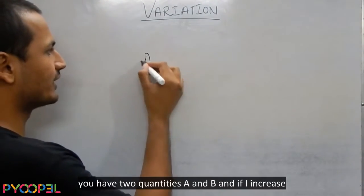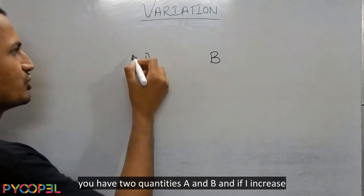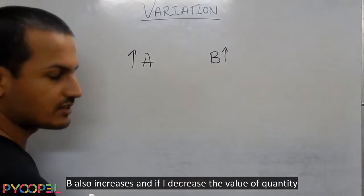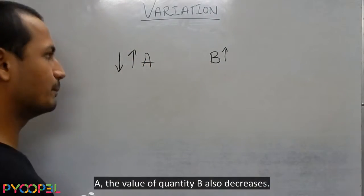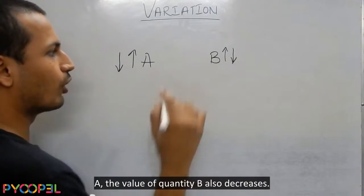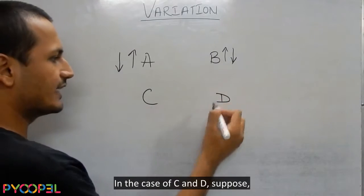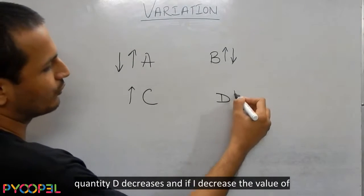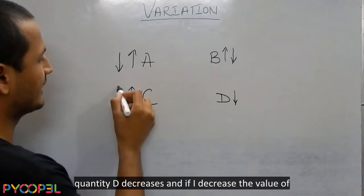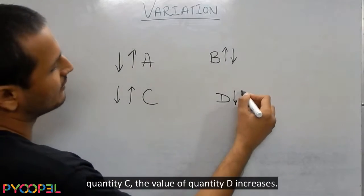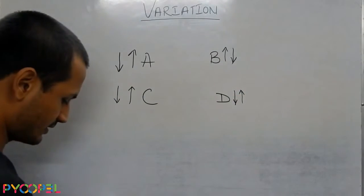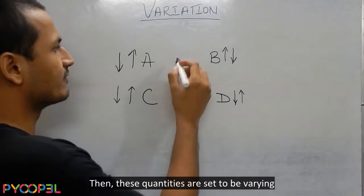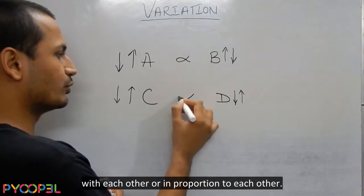Suppose you have two quantities A and B. If I increase the value of quantity A, the value of quantity B also increases, and if I decrease the value of quantity A, the value of quantity B also decreases. In the case of C and D, if I increase the value of C, the value of D decreases, and if I decrease the value of C, the value of D increases. Then these quantities are said to be varying with each other, or in proportion to each other.